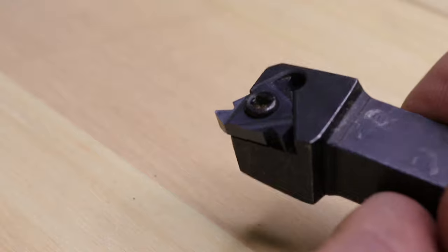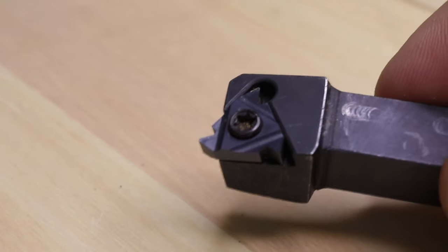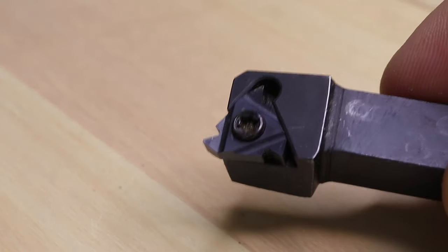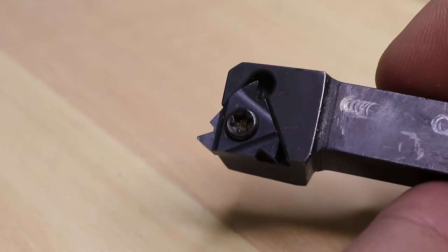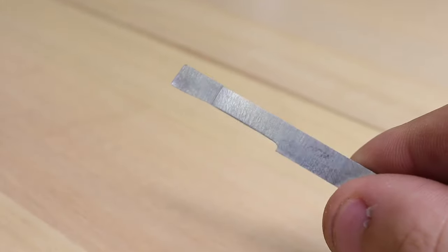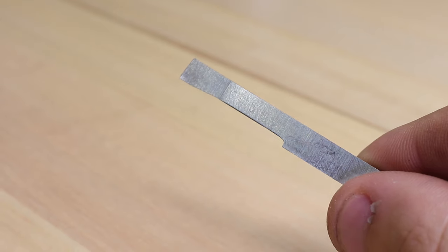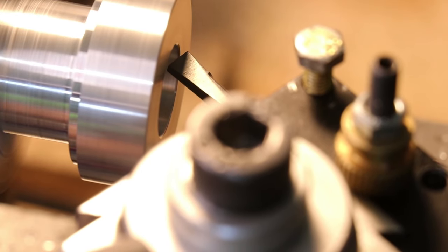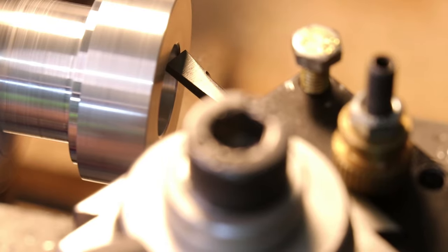If you plan on cutting threads using the lathe, I think these carbide thread cutting tool holders work really great, and if you plan on doing boring on the lathe, I think grinding your own high speed steel boring bars is the way to go because that will ultimately get you the best surface finish.